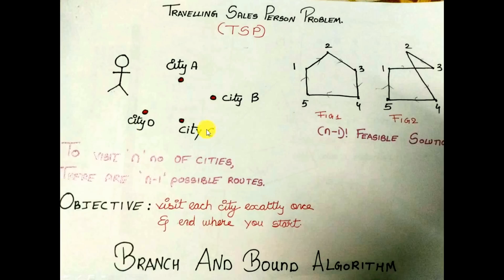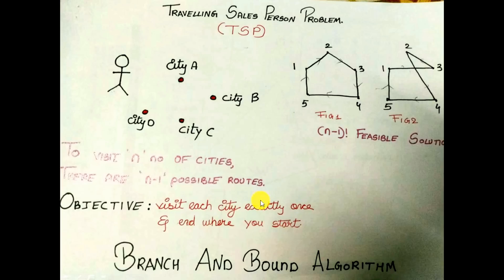The objective of TSP is to select the sequence of cities in such a way that the distance and time required for traveling will be minimized. The two key rules to remember are: visit each city exactly once, and end where you started. If the salesman starts from city A, he should visit cities B, C, D and come back to city A, and he should not visit the same city twice.